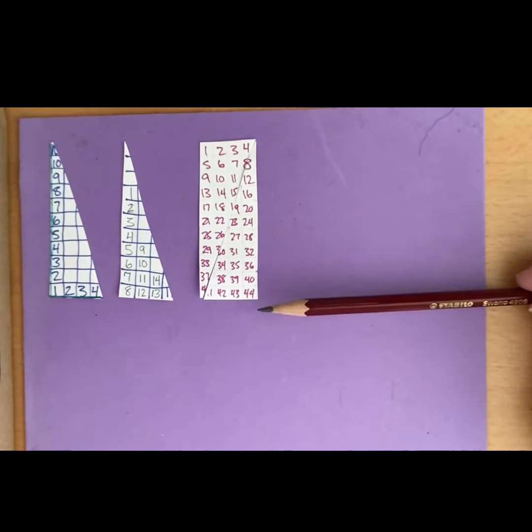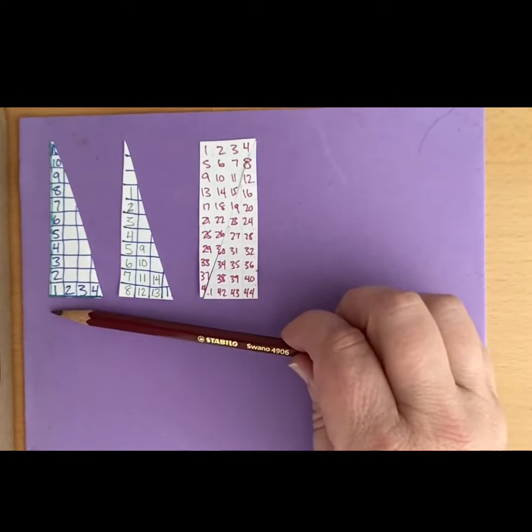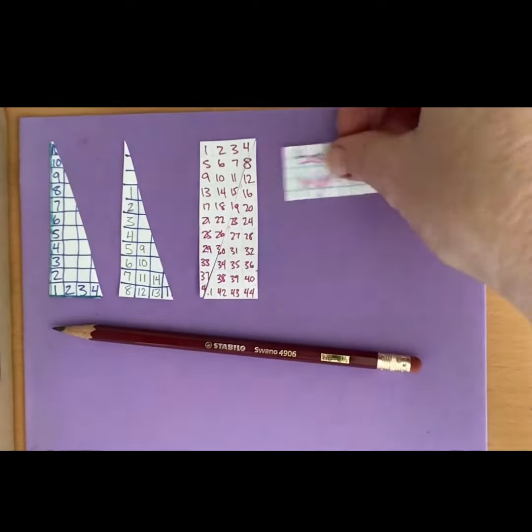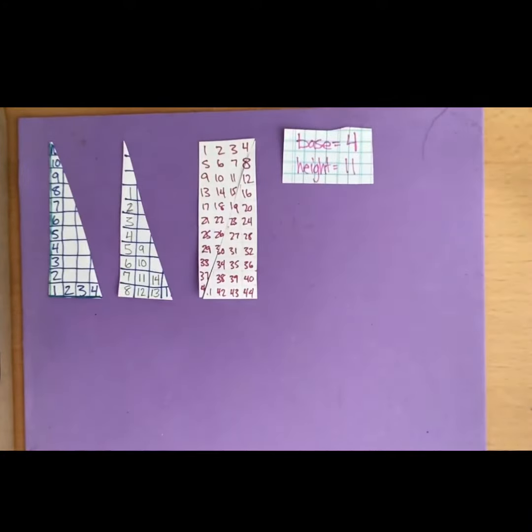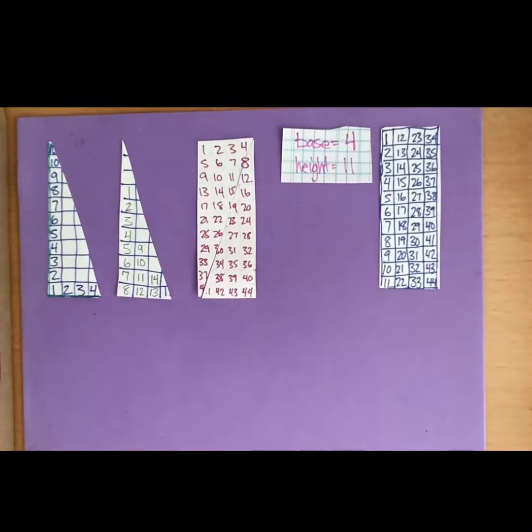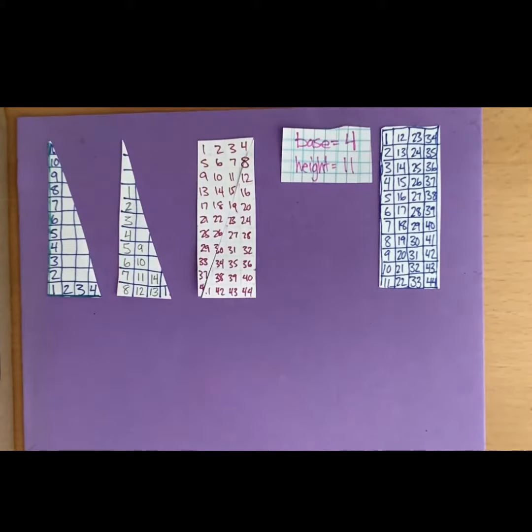And I get to 44, and I've got that because I know that the area of a rectangle is the base, which in this case is 4, times the height, which was 11. And that is a very easy calculation to make.